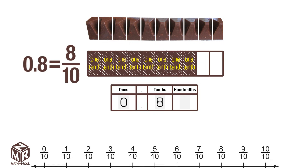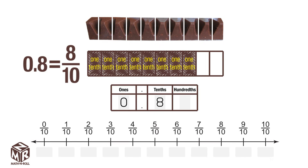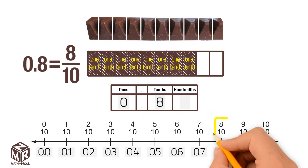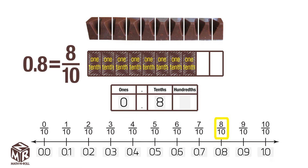We can also use a number line. Label the number line with decimals that are equivalent to the fractions: 0 tenths, 1 tenth, 2 tenths, and so on. Locate the point 8 over 10. The fraction 8 over 10, or 8 tenths, is equivalent to the decimal 0.8.